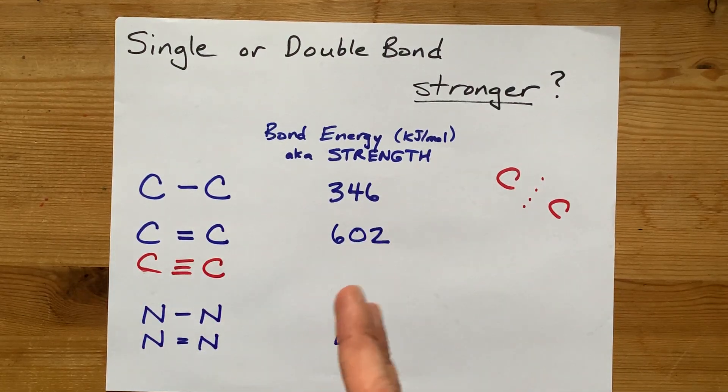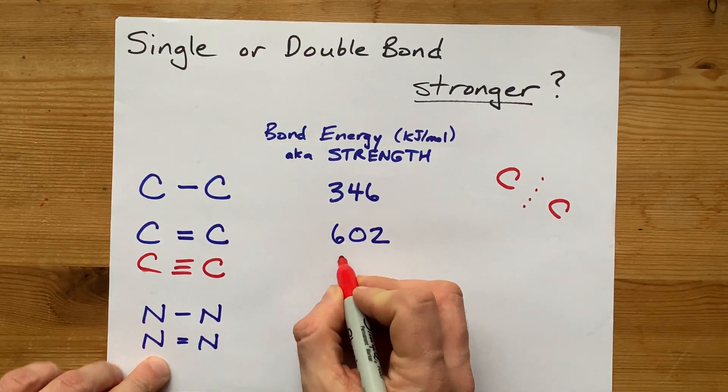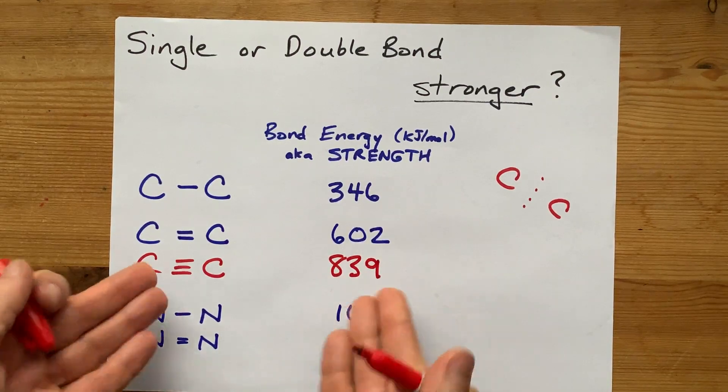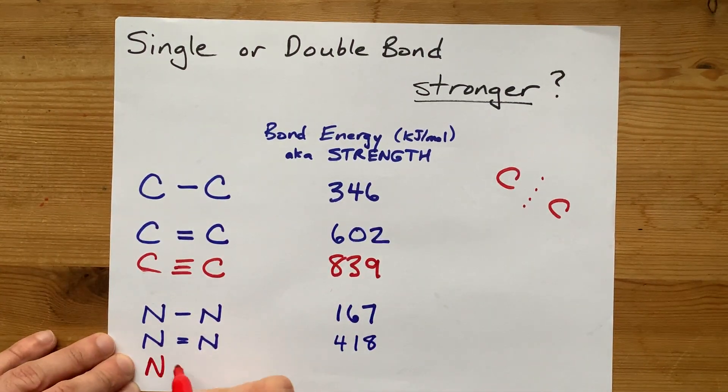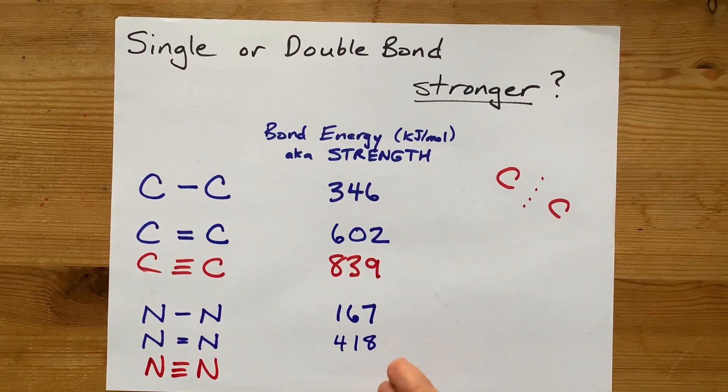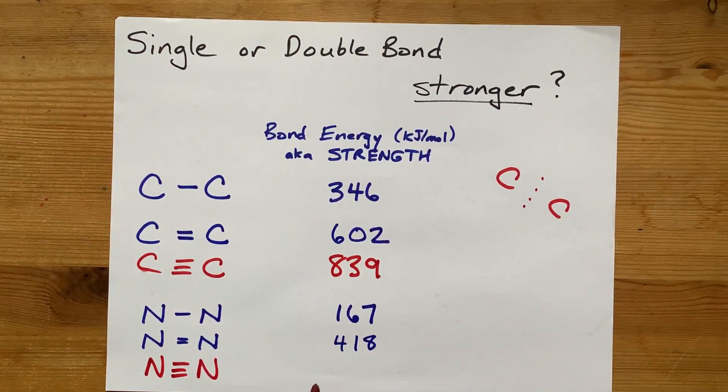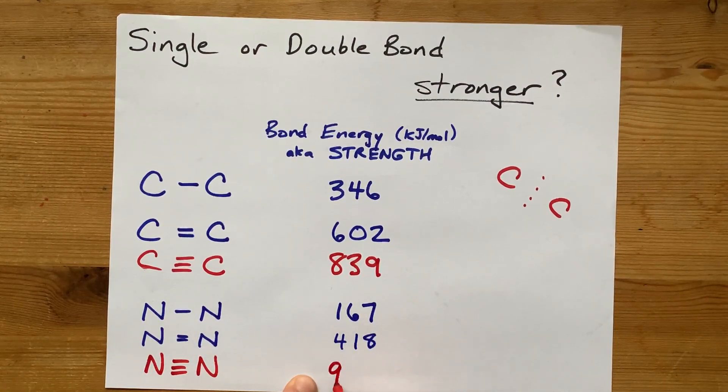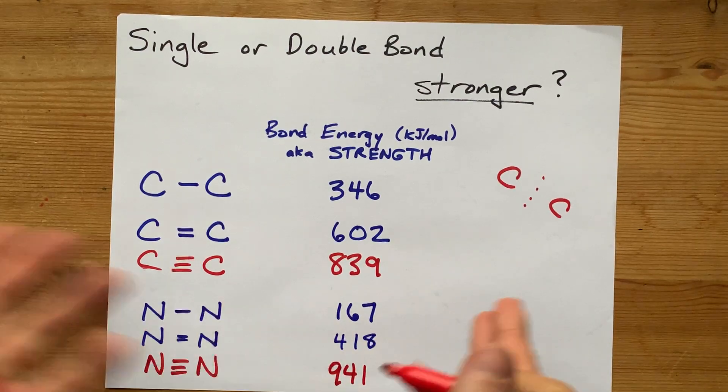The data I have says that this one's like 839, stronger than the double. If you're looking for two nitrogens that are triple bonded together, the data I'm looking at here says it's 941. That's even higher than the double.